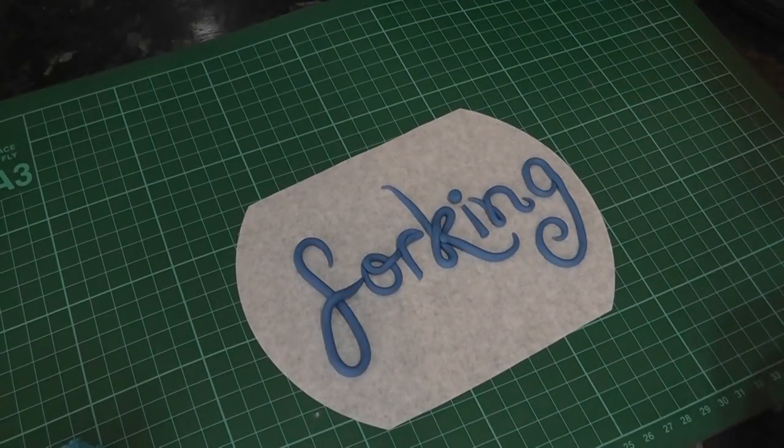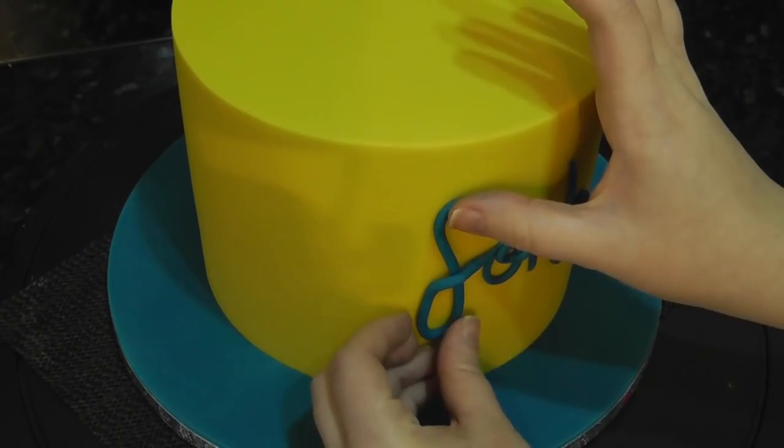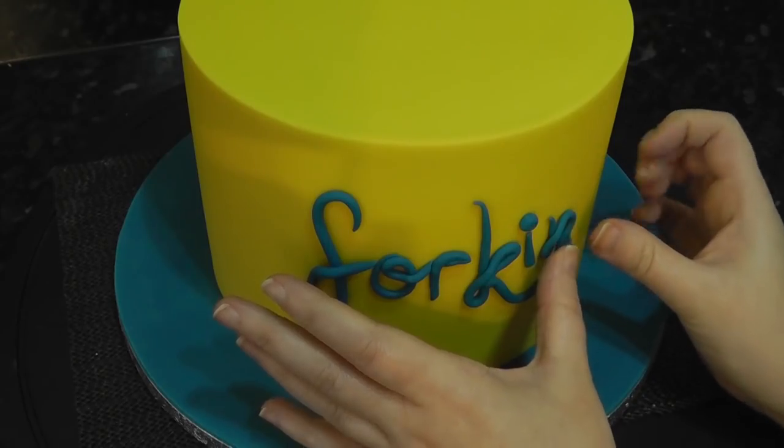Let these firm up a bit so they don't move when handling. Apply them to the front of the cake with water. I find starting with a centre letter helps for placing it in the middle.